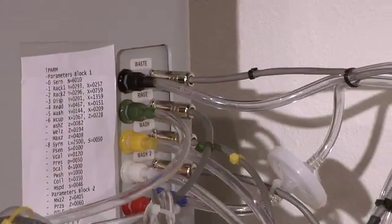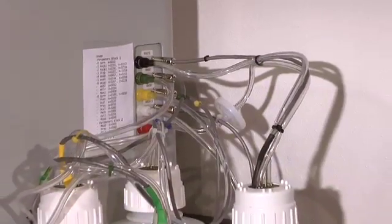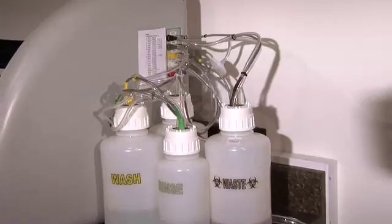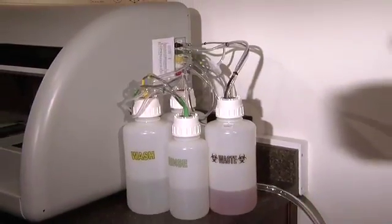Located outside of the Astoria discrete are easily accessible bottles for wash, rinse and waste. These bottles are pressurized to effectively move the liquids throughout the system and simplify waste disposal.